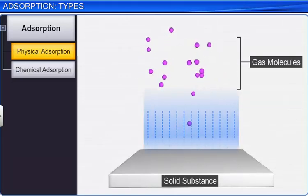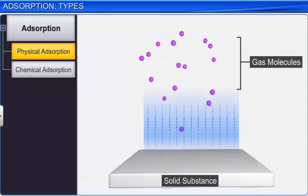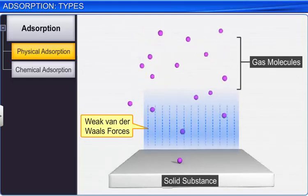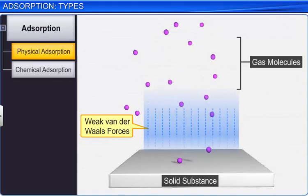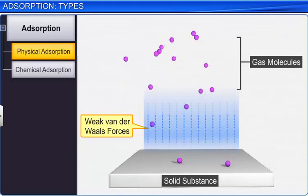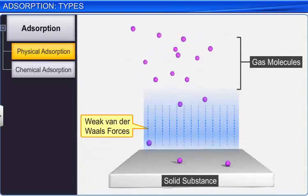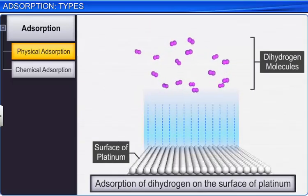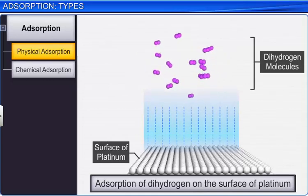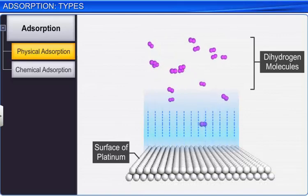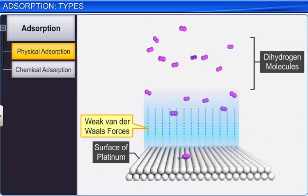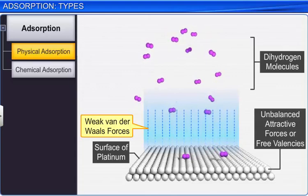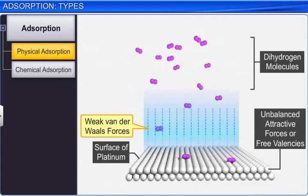When gas molecules or atoms are held to the surface of a solid by weak Van der Waals forces, it is called physical adsorption, also known as physisorption or Van der Waals adsorption. For example, in the adsorption of dihydrogen on finely divided platinum, hydrogen molecules are attracted towards the platinum surface by weak Van der Waals forces and then adsorbed due to unbalanced attractive forces or free valencies on the metal surface.